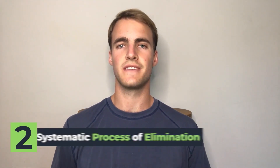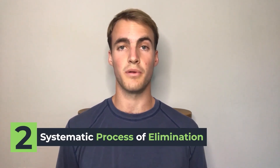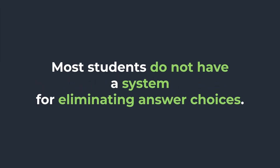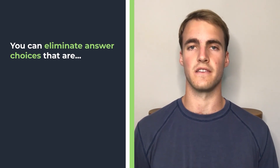My second tip for improving your score on the CARS section is to use a systematic process of elimination. We all know what process of elimination is — it's a process we can use to narrow down our answer choices when going through the questions of the CARS section. But what I find is that most students do not have a system or reasons for why they eliminate answer choices. So I boil it down to what I call the four I's of process of elimination.